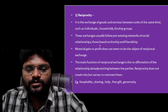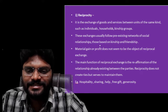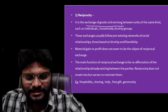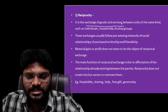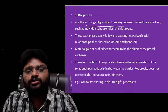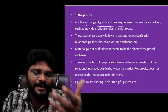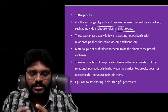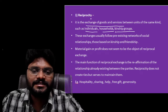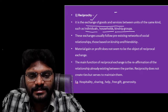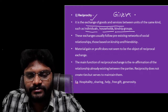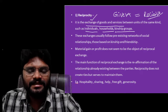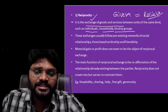Reciprocity is the exchanging of goods and services between units of the same kind, such as individuals, households, or kinship groups. The giving and taking of goods and services takes place between parties of similar kind — chief to chief, within a household (parents to offspring or grandparents to grandchildren), or among kinship groups such as clan or lineage members. If one person gives a gift or good to another, the receiver also reciprocates by giving another good — it may not be the same value and may even be delayed.